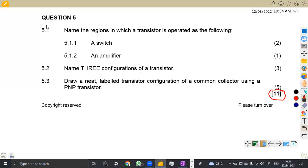The 5.1 we are given to name the regions in which a transistor is operated as the following. Name the regions, remember the regions for the saturation, the cutoff, all those you are supposed to name. Is it the active region? Is it where a transistor is going to operate?